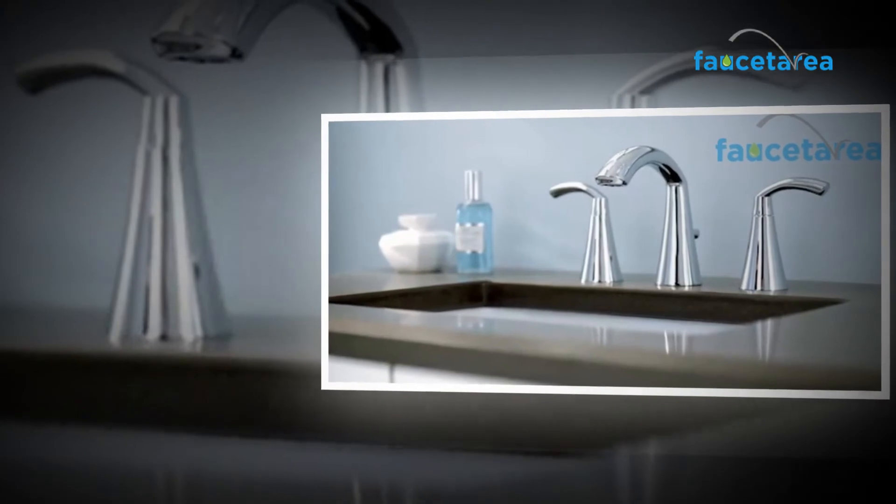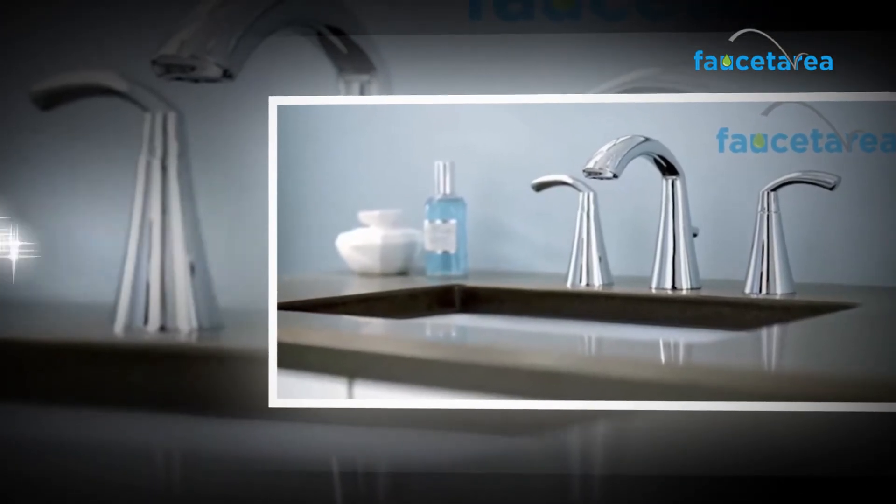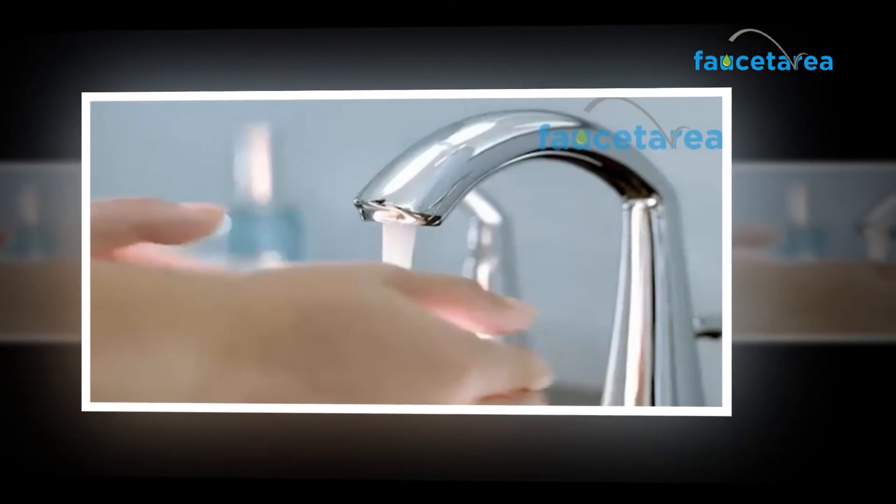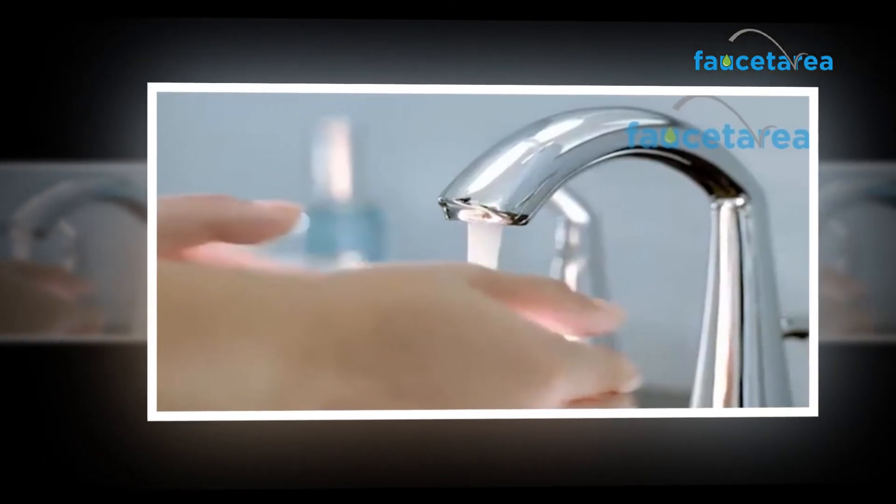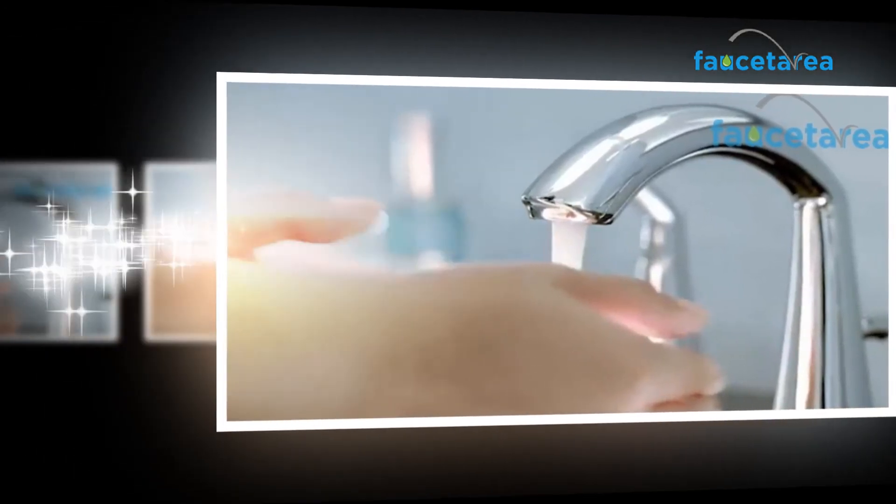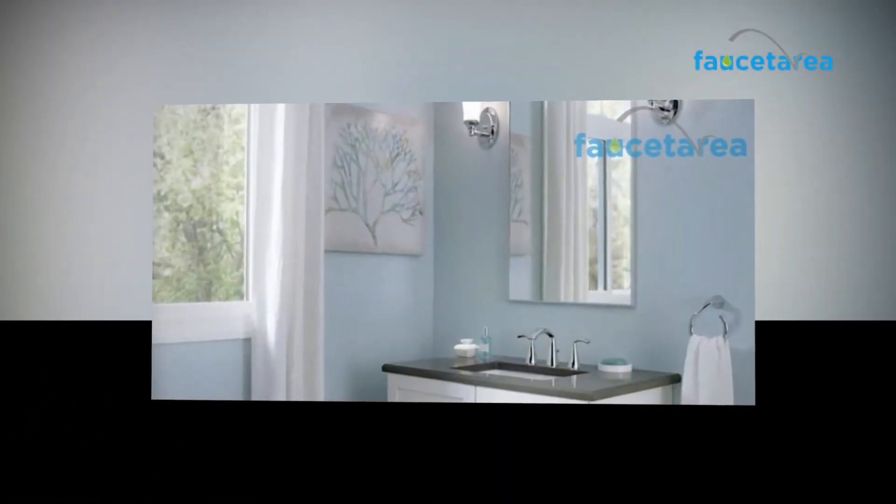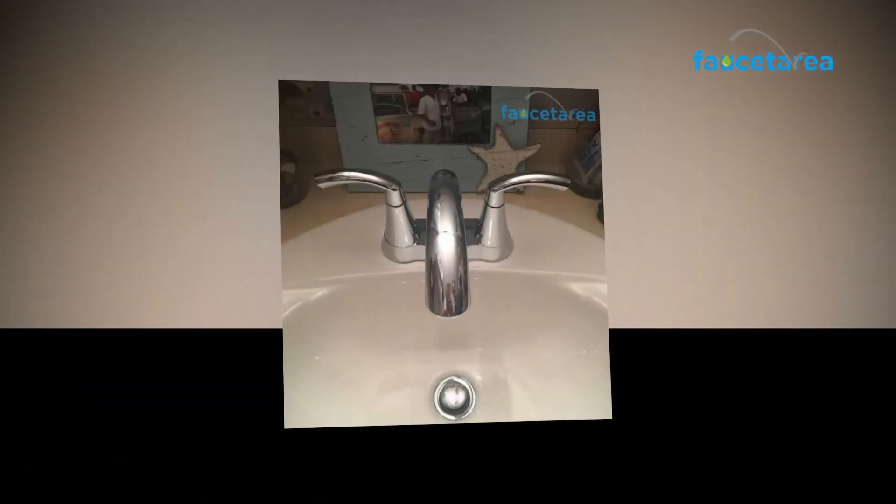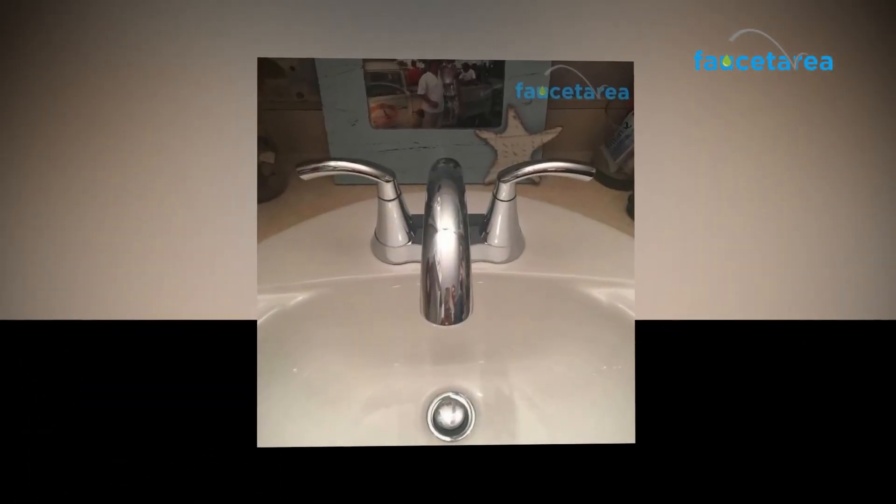This also provides an elegant look and enhances the beauty of your bathroom. Moen 6172 is a two-handle high arc bathroom faucet in brushed nickel which is elegant in style. It also has a matching lift rod and drain assembly for flawless water supply. For more information about this product, do visit www.moen.com or read the user manual that comes with it.